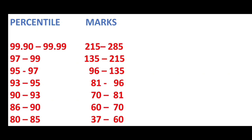For securing a percentile between 93 and 95, the student needs to get marks between 81 and 96. The student who gets a percentile between 90 and 93 should get marks between 70 and 81. If a student gets a percentile between 86 and 90, they will get marks between 60 and 70. For 80 to 85 percentile, one needs to secure marks between 37 and 60.